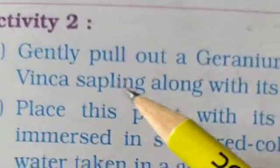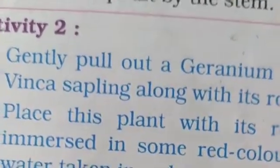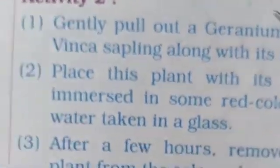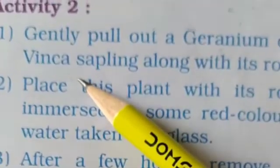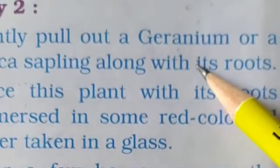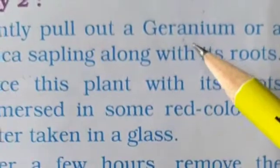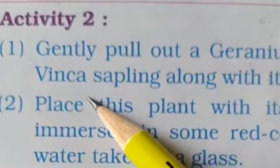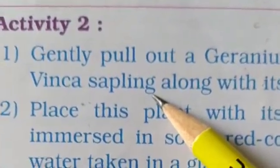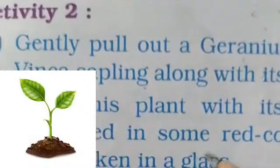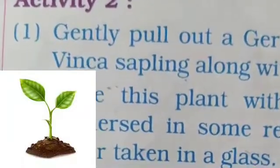Now the activity two. Number one: gently pull out a geranium or a vinca sapling along with its roots. Gently means carefully. Geranium means small shrub plants. Vinca is a periwinkle flower. Sapling means small plant — जो छोटा सा पौधा, नन्ना पौधा जो अभी grow हो रहा है — along with its roots.